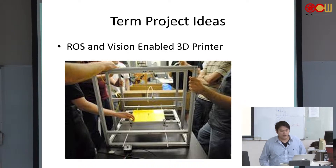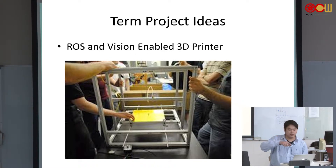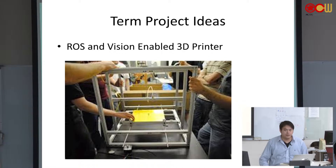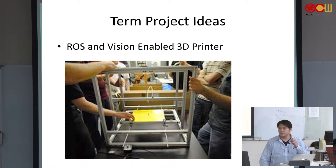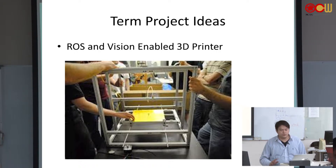Another interesting idea is using Rust and vision on a 3D printer. For example, if someone draws something on a yellow plate, you could use the vision system to send commands to the 3D printer, enabling some very interesting functionality.